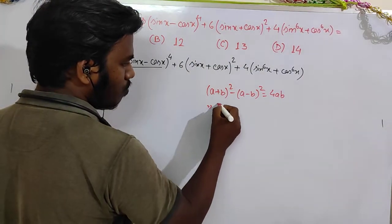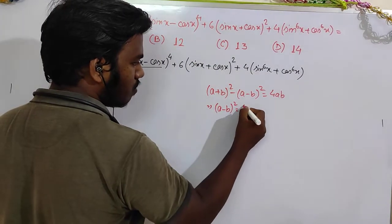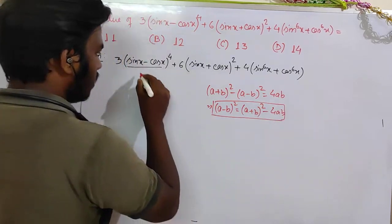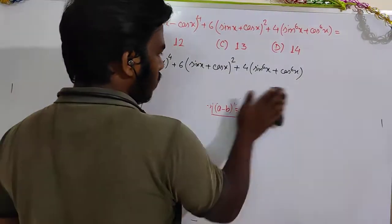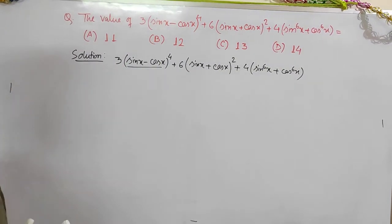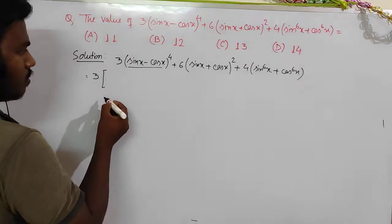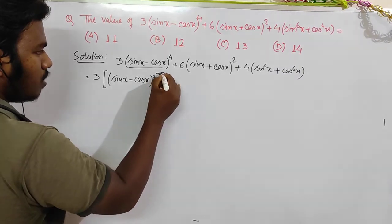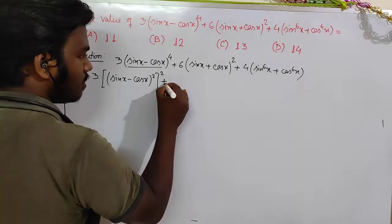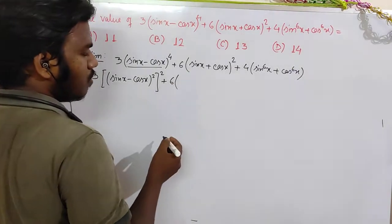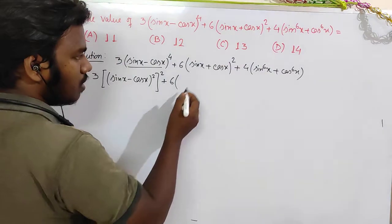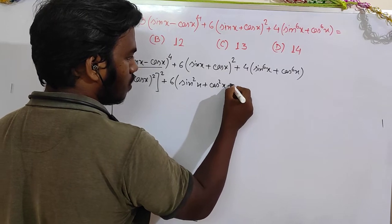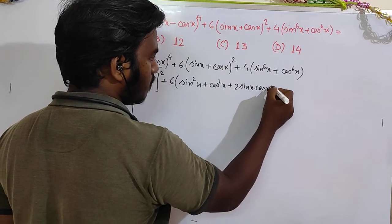Let's say a and b. We can write: a minus b whole squared equals a plus b whole squared minus 4ab. So, sin x minus cos x whole squared equals sin x plus cos x whole squared minus 4 sin x cos x. Expanding: a squared plus b squared plus 2ab.